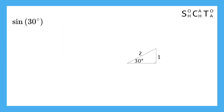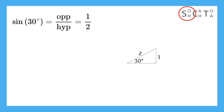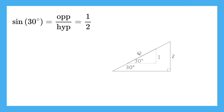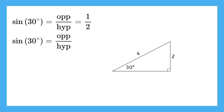Let's begin by finding the sine of this 30 degree angle. Since sine is the ratio of the opposite side over the hypotenuse, we get 1 over 2. But let's look at a triangle twice as big — it's similar to our original triangle. Pause the video now and find the sine of this 30 degree angle.